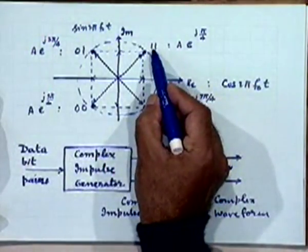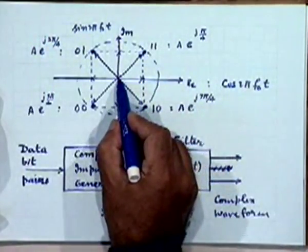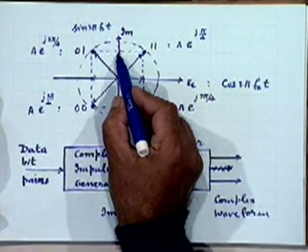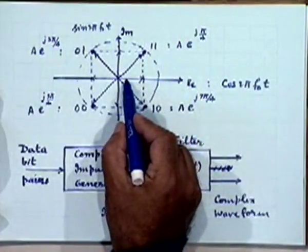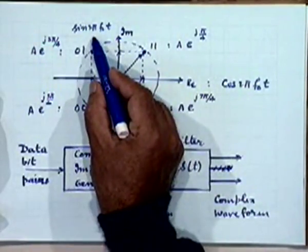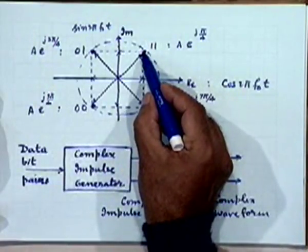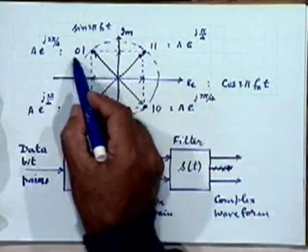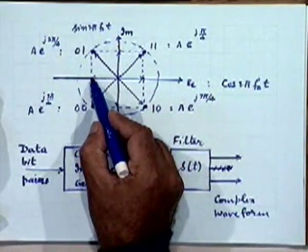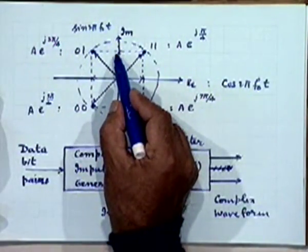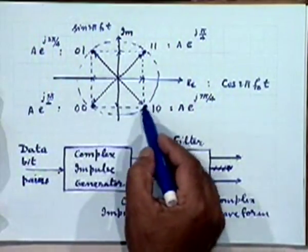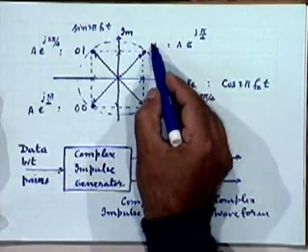Depending on what bit sequence you have — for example if two bits are 1,1 — we have cos(2πf₀t) and also sin(2πf₀t) being simultaneously represented. That gives the amplitude of the cosine carrier and the sine carrier, and the resultant phasor is this point. Similarly, when you have 0,1, the in-phase carrier is -cos(2πf₀t) and the quadrature carrier is +sin(2πf₀t), giving a different resultant phasor. This holds for each of the four possible phases corresponding to the four possible bit pairs.